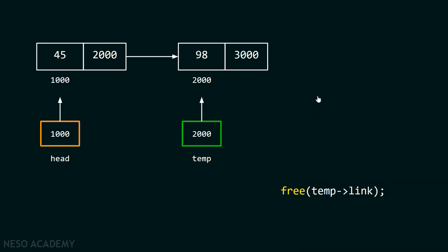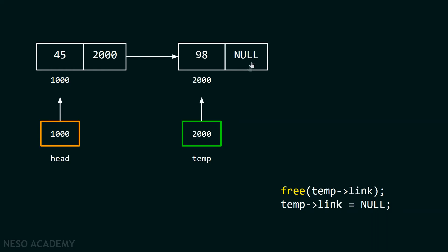That is what we can see over here. By just using the temp pointer, we can delete the last node of the list. After this, the next step is to put null in place of 3000. So temp->link = null will replace this 3000 with null, and the link part of this node is also updated.